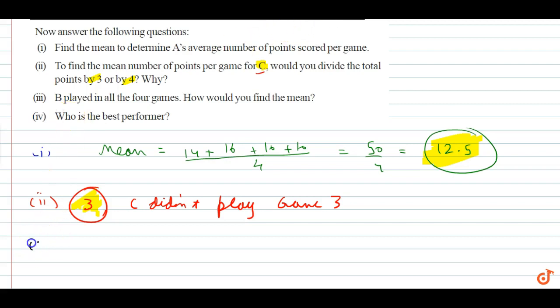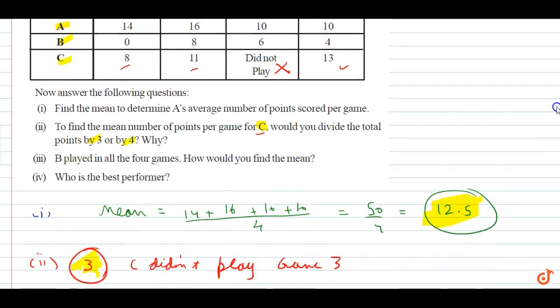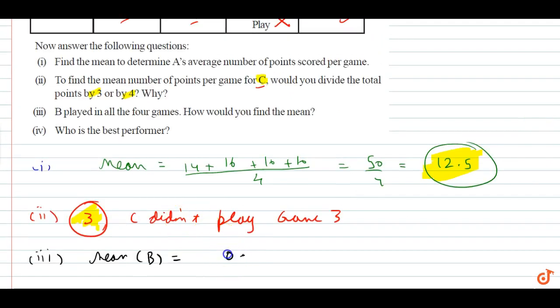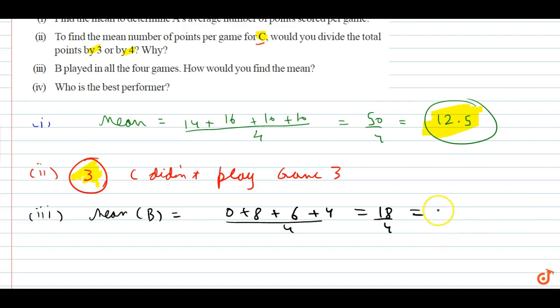Third, let's check. B played in all 4 games, how would you find the mean? Mean of B is, total score is 0, 8, 6, 4. 0 plus 8 plus 6 plus 4 divided by 4. What is it? 18 by 4, and this is 4.5. 4.5 is B's mean.